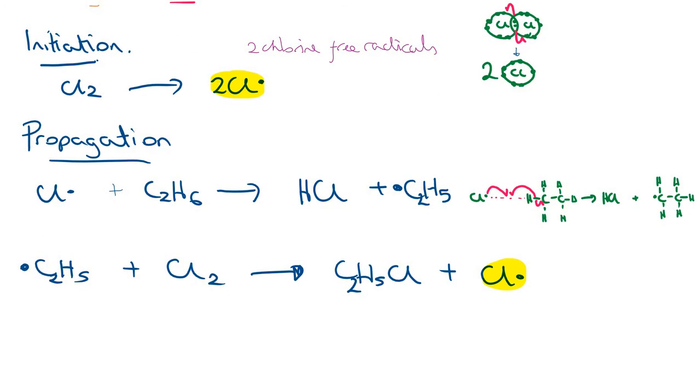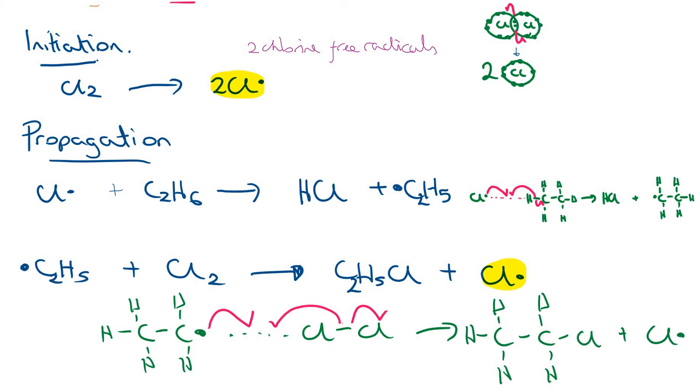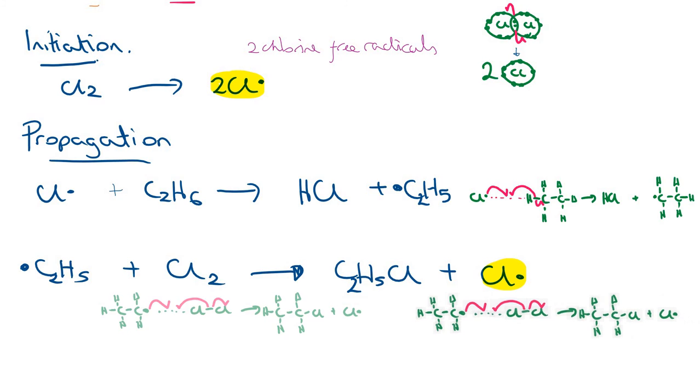Again just to show you how that happens. You've got the ethyl radical with chlorine. A single headed arrow shows the movement of one electron. What you have here is you have this product, which is the one you want, and you have reformed a chlorine radical. We've formed the desired product here.